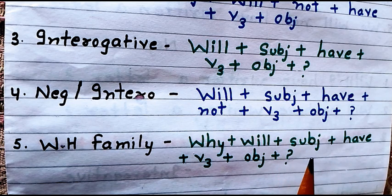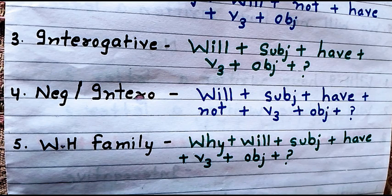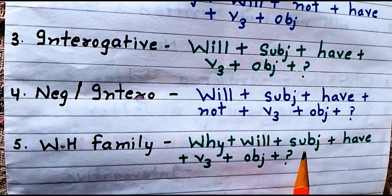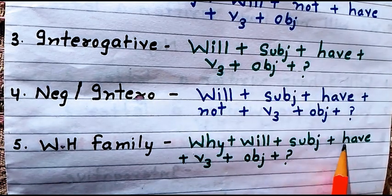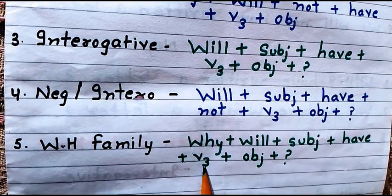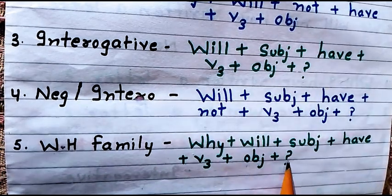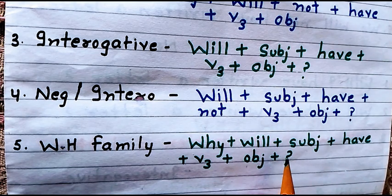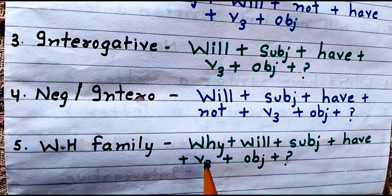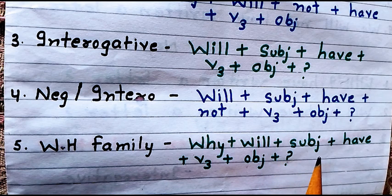The last type uses WH family words. In this, WH family words come first, then helping verbs, then subject, then have, then the third form of verb and object. If you need to add 'not' in a WH family negative sentence, it comes after 'have' — because the 'have + third form' combination breaks when we form negative sentences in future perfect.